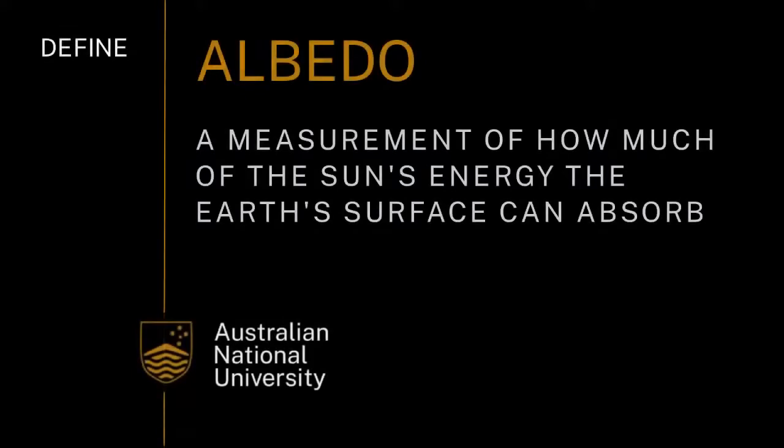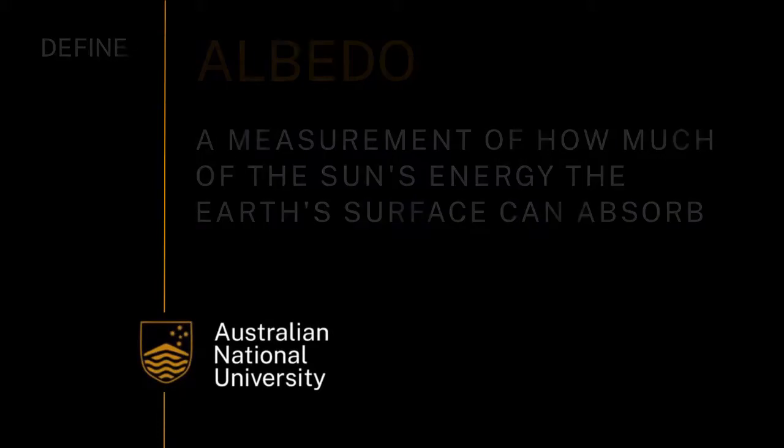If we remove all of the vegetation from a particular location, we change the soil, we change the reflectivity of the surface, and we call this the albedo. The albedo, basically, is how much of the sun's energy the surface can absorb. Very dark surfaces can get very hot because they absorb a lot of the sun's radiation. Very light surfaces tend to reflect a lot of that energy.